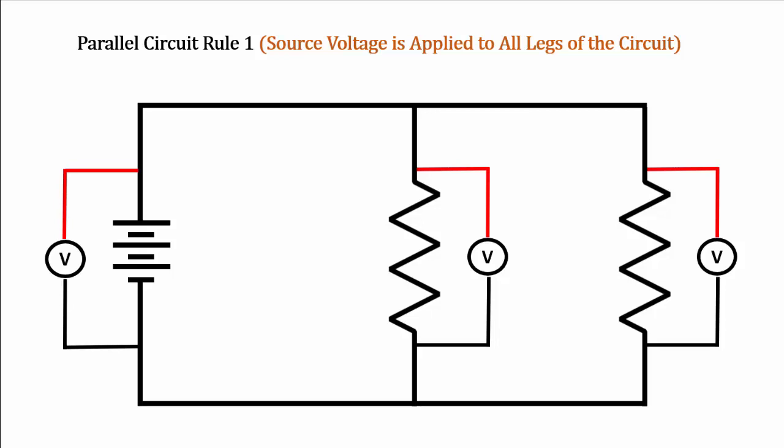Let's understand parallel circuit rule one a little better. Rule one states that source voltage is applied to all legs of the circuit. This means that if we had a 12-volt battery, then each load or each path would receive 12 volts.